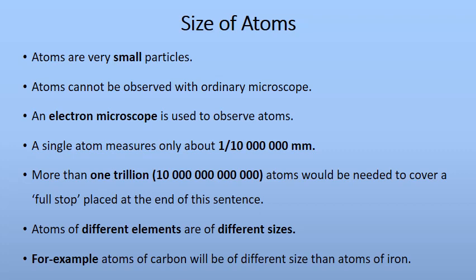To illustrate how small an atom is: more than one trillion atoms are needed to cover a full stop placed at the end of a sentence. Another important point is that different elements have atoms of different sizes. Hydrogen has an atom of a different size than oxygen; carbon has a different size than sodium. For convenience: atoms of carbon are of a different size than atoms of iron.